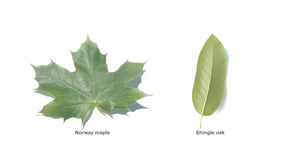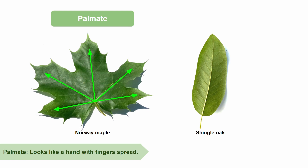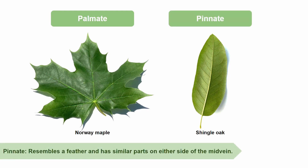Veining patterns are also helpful in leaf identification because they influence the overall shape of the leaf. There are two main types of veining patterns for simple leaves that are super important to know. The first veining pattern is palmate, which looks like if you were to put your hand out in front of you and spread your fingers. Acer platanoides, otherwise known as Norway maple, is a very well-known tree that has a palmate veining pattern. The next commonly found veining pattern is pinnate, which resembles a feather and has similar parts on either side of the mid-vein. Quercus imbricaria, otherwise known as shingle oak, is a good example of a pinnate veining pattern.